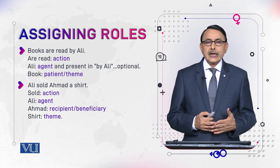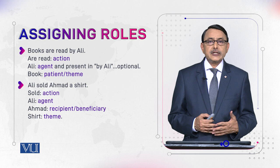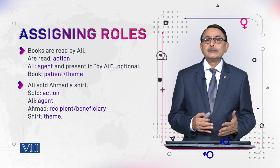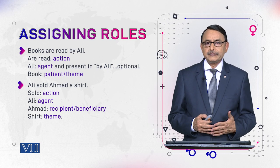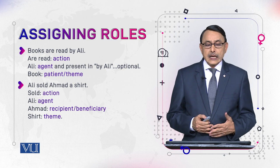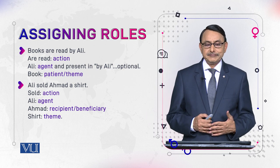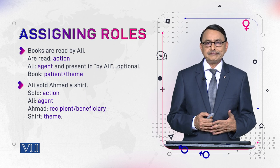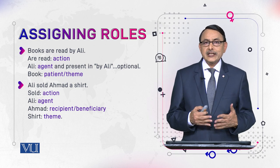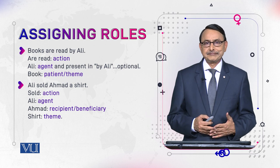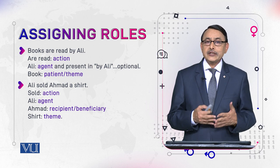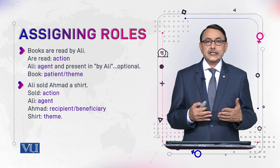The book remains the patient, or another term used for patient is 'theme.' Now see another example: 'Ali sold Ahmad a shirt.' Here 'sold' is the action — it took place in the past. Ali is the agent, the seller. Ahmad is the recipient or beneficiary — Ahmad doesn't receive the action directly; he benefits from the result of the action. The shirt is what is sold, so it receives the action of the verb; that's why it is the theme or patient.